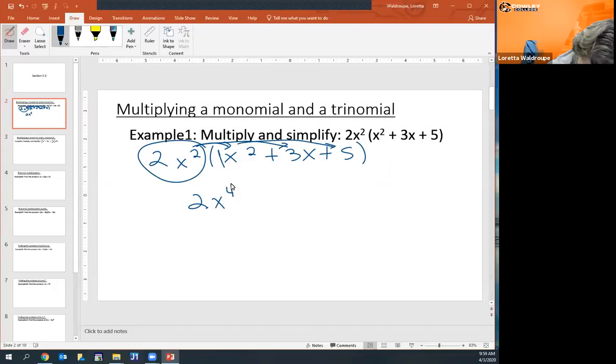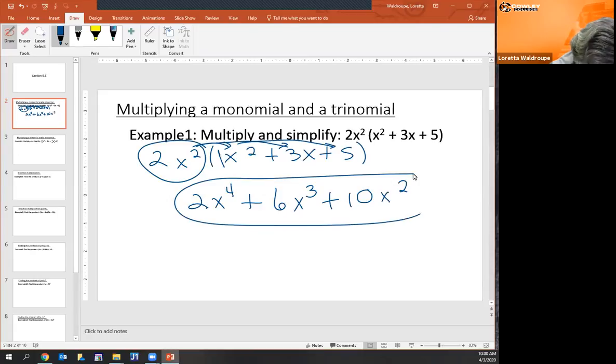2x squared times 3x, 2 times 3 is 6, x squared times x is x cubed. 2x squared times 5, 2 times 5 is 10, and then I have my x squared, and you're done.